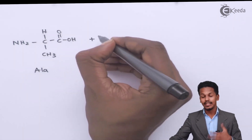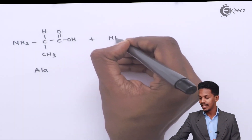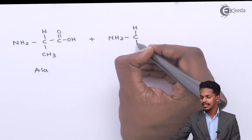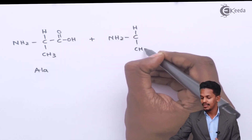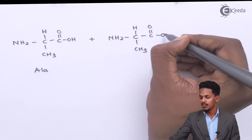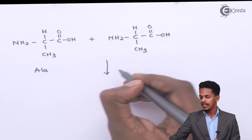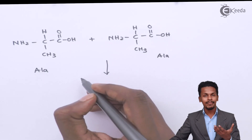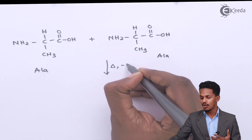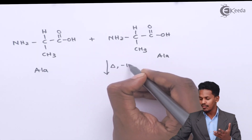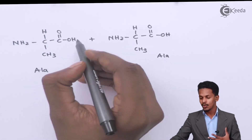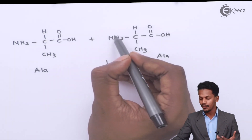Talking about the other molecule, suppose if we consider another alanine: NH2, CH(CH3), C double bond O, OH. And suppose if this undergoes dehydration — while heating or by using any kind of condition — suppose we get removal of water, that is OH from one end and a hydrogen atom from the other.